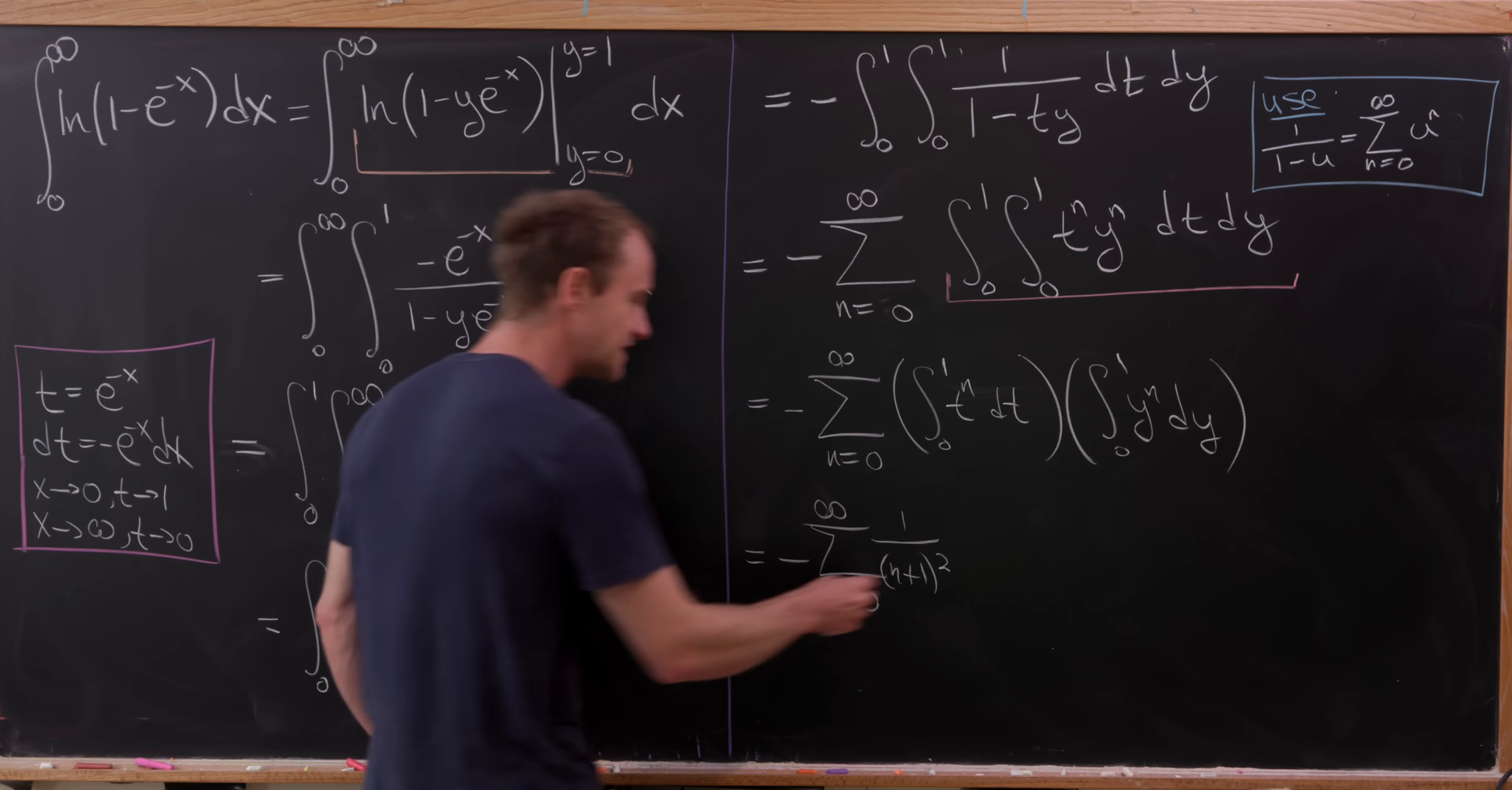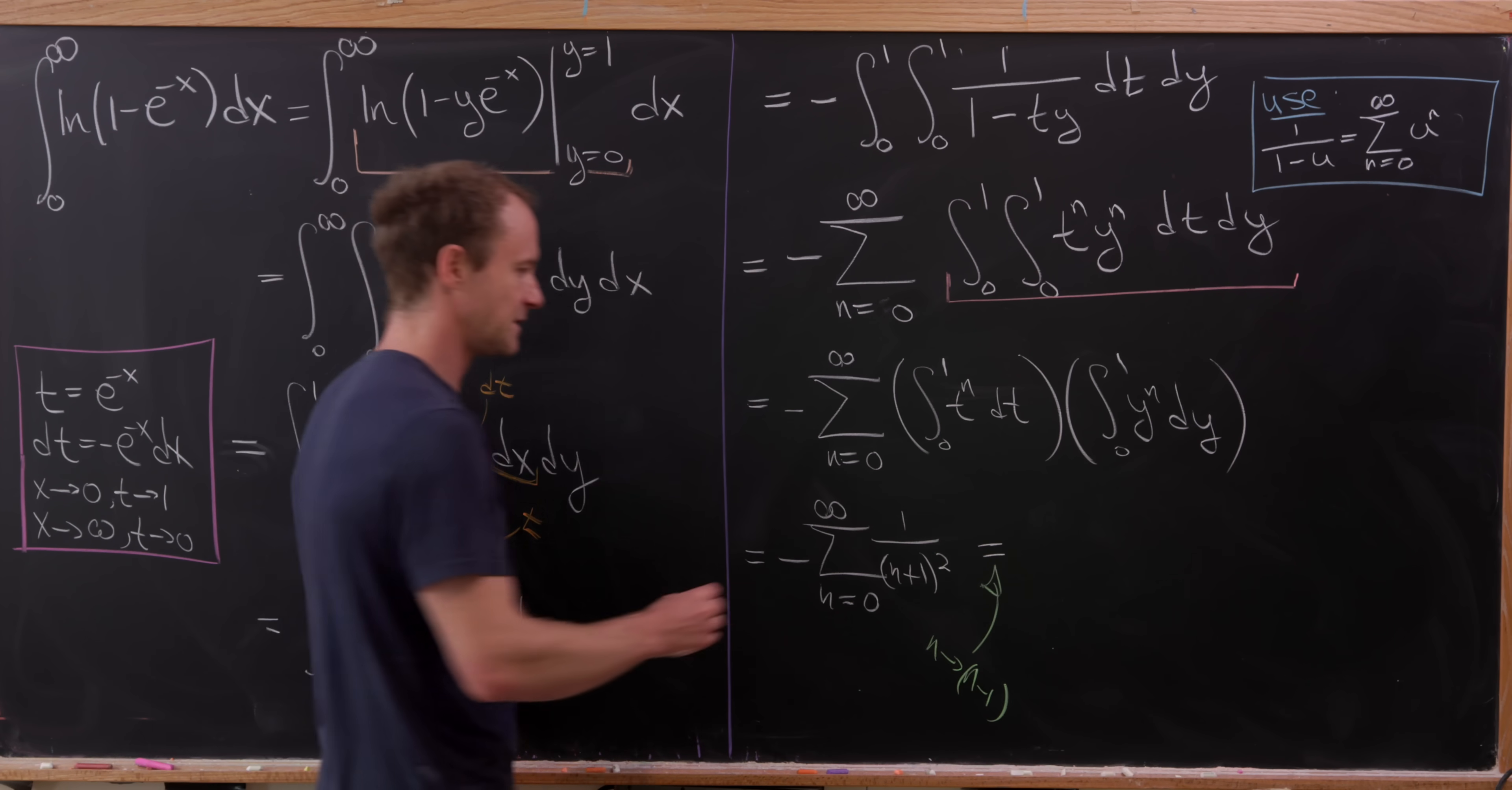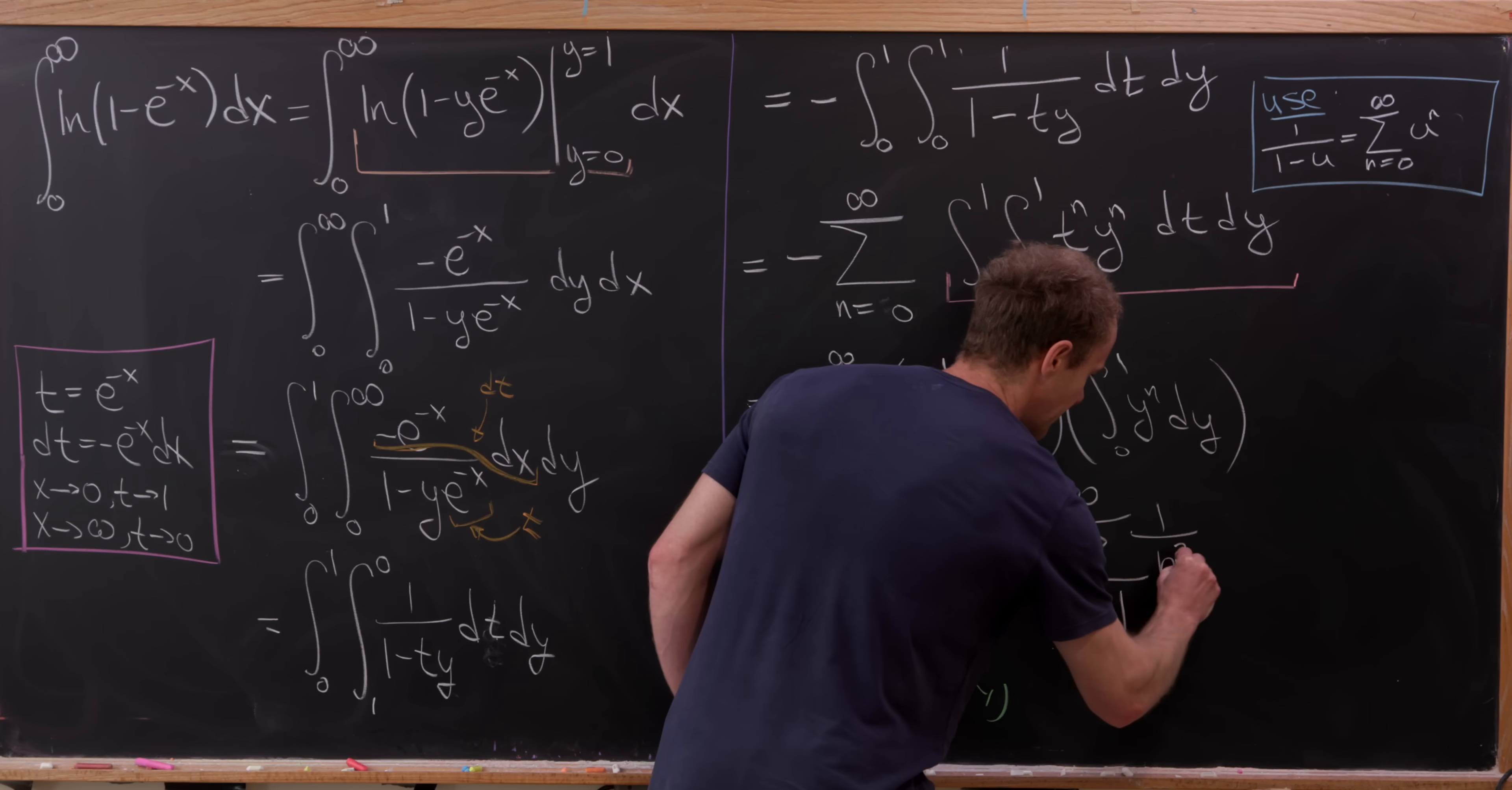At this point, something to make this look a little bit more familiar would be to do an index change. So replace all the n's with n minus ones. And that's going to change my starting point from zero to one. So I have the sum as n goes from one to infinity of one over n squared.